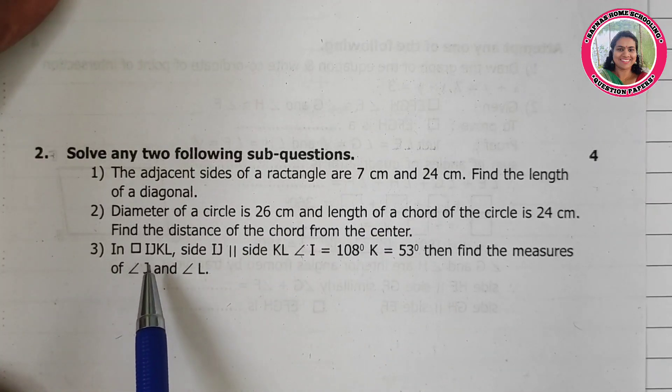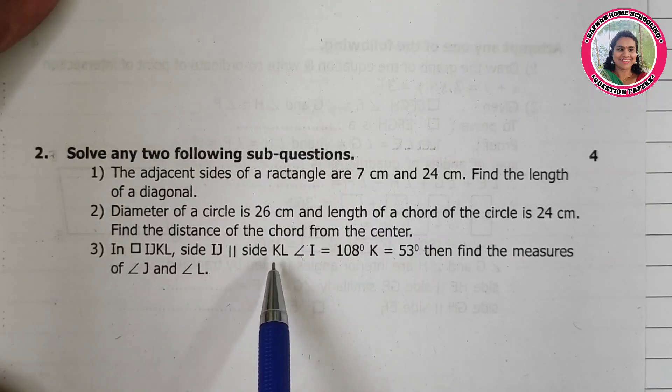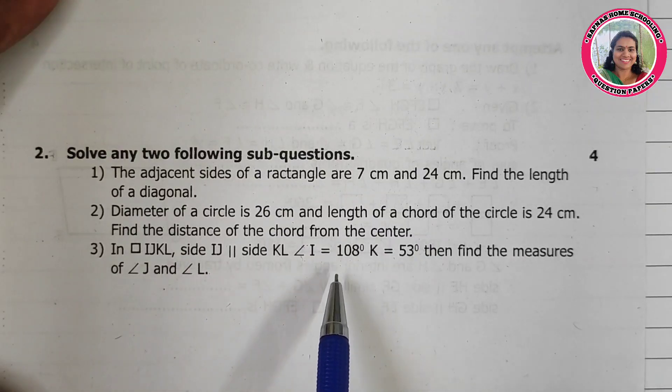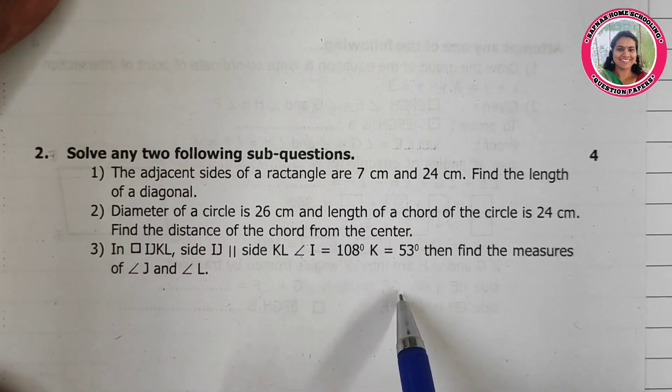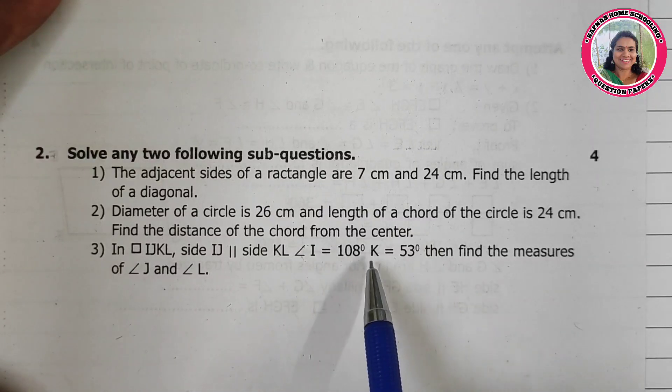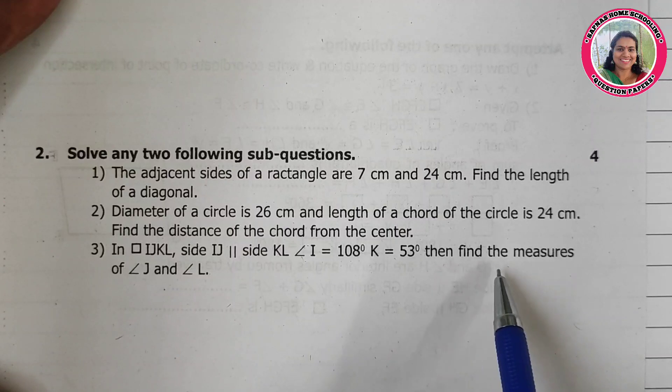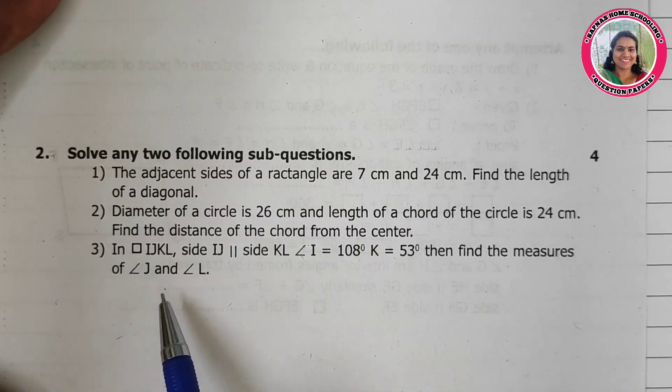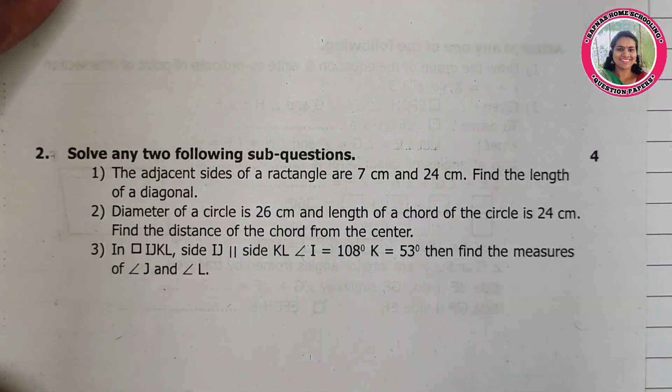In quadrilateral IJKL, side IJ is parallel to side KL. Angle I is equal to 108 degrees, K is equal to 53 degrees. Then find the measures of angle J and angle L. Now we will turn to page 2.